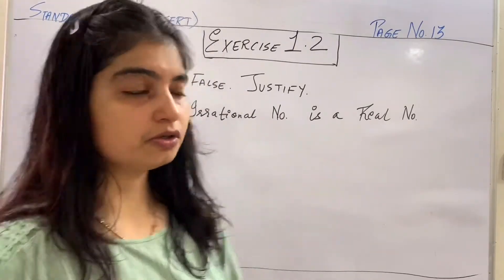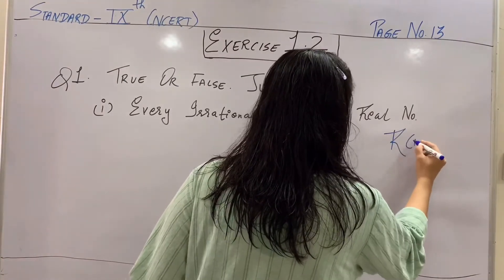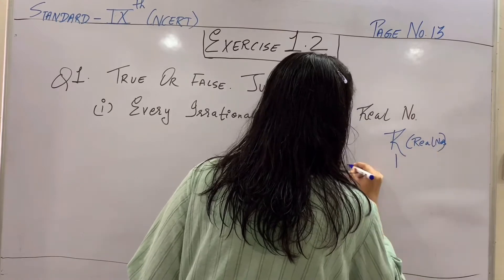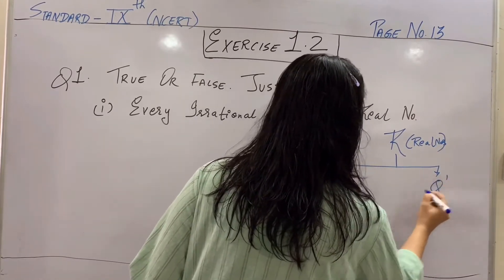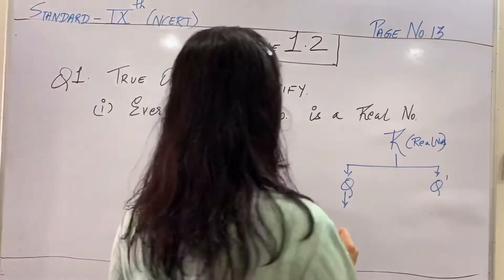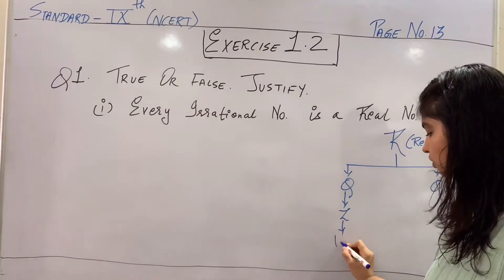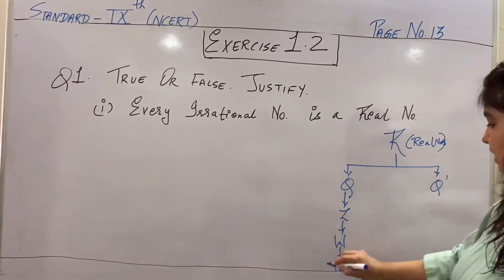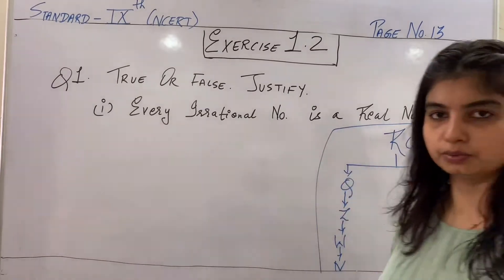I will again suggest you to remember the flow chart wherein R is the father, i.e. the real numbers. Uske neeche kya aata hai? It's divided into two: the rational numbers and the irrational numbers. Rational ke neeche kya aata hai? The integers, ke neeche whole numbers, ke neeche the natural numbers. Agar yeh flow chart ab achche se yaad ho gaya, then you can solve any of the true and false.